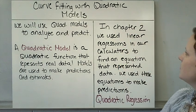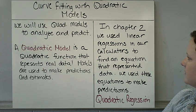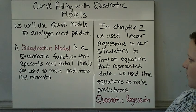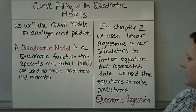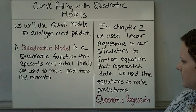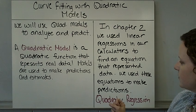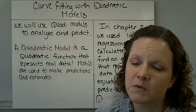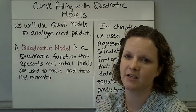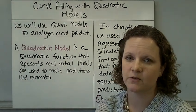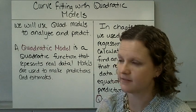In chapter 2, we used linear regressions in our calculators to find an equation that represented the data. We used these equations to make predictions. So in chapter 2, it was called a linear regression. Today we are going to do quadratic regressions.